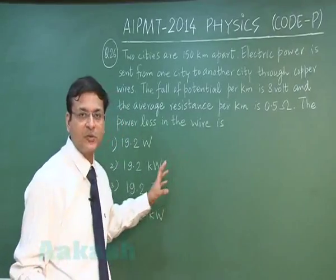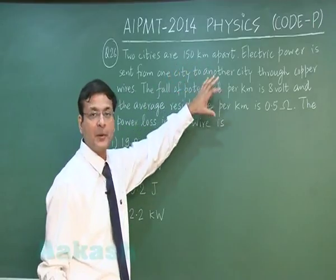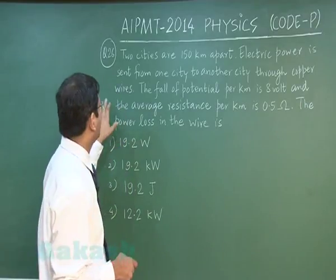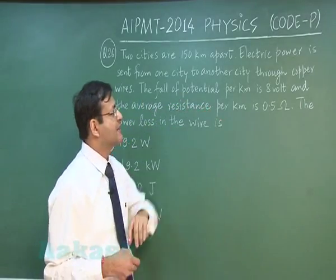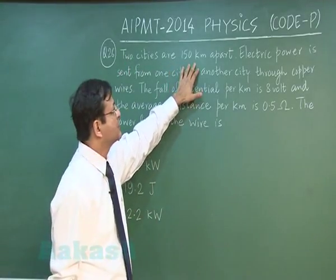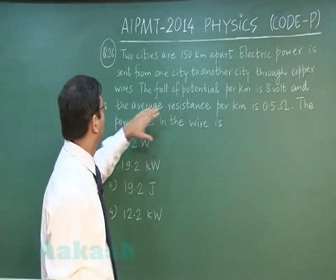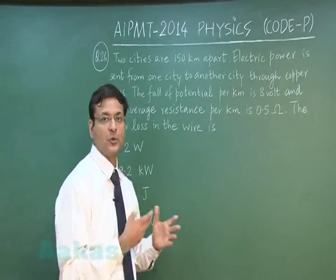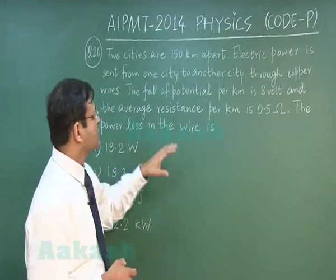Now in the next question, that is question 26, as it reads: Two cities are 150 kilometer apart. Electric power is sent from one city to another city through copper wires. Now the fall of potential per kilometer is given to you 8 volt, that means the entire journey of 150 kilometer, you see 1200 volt of drop is there, and the average resistance per kilometer is 0.5 ohm. So the total resistance will be 75 ohm.